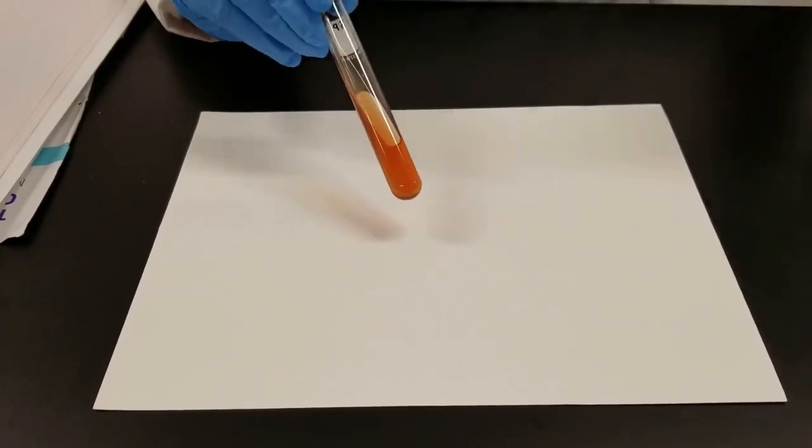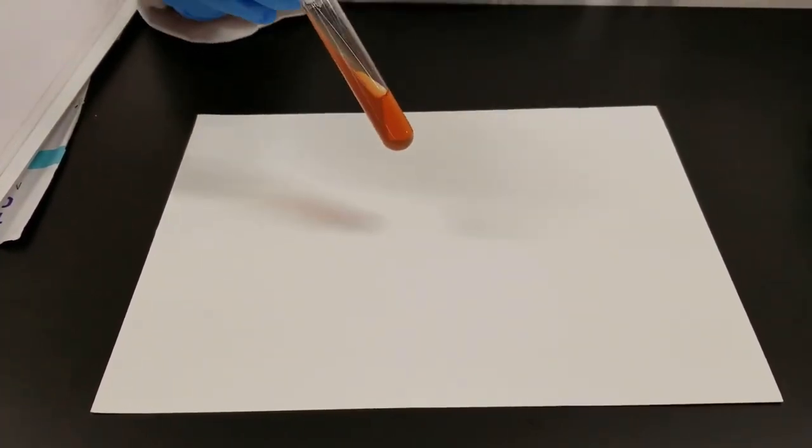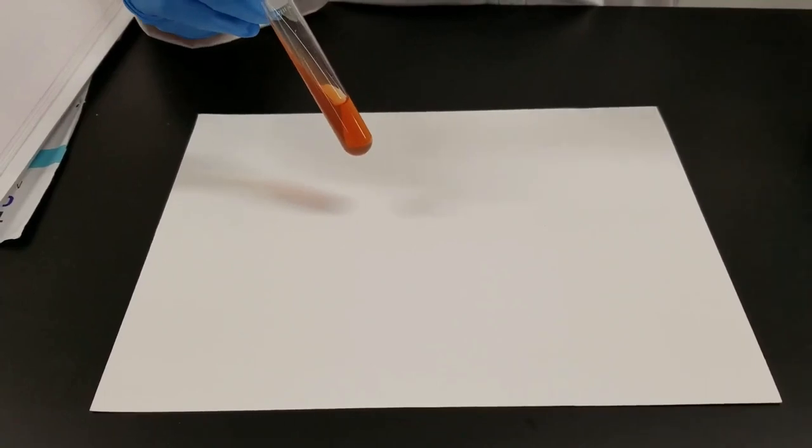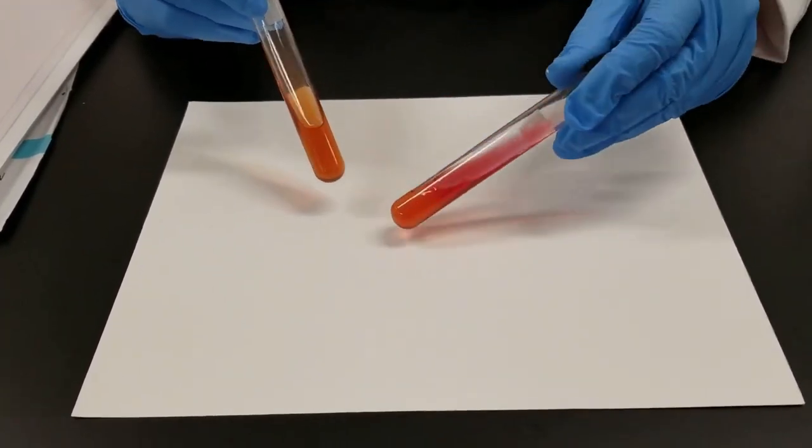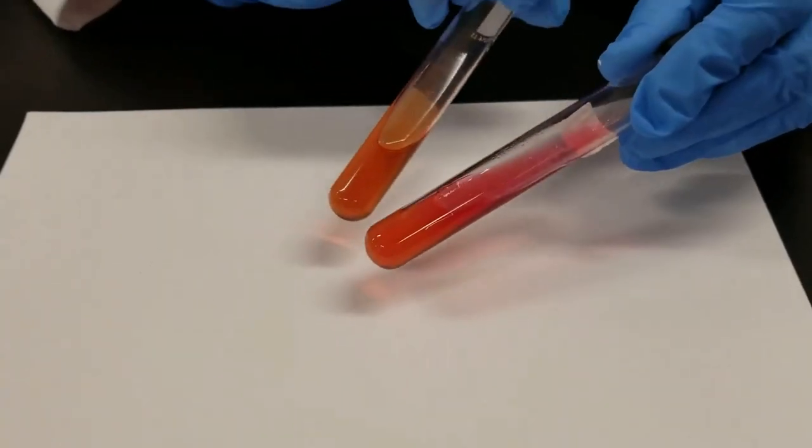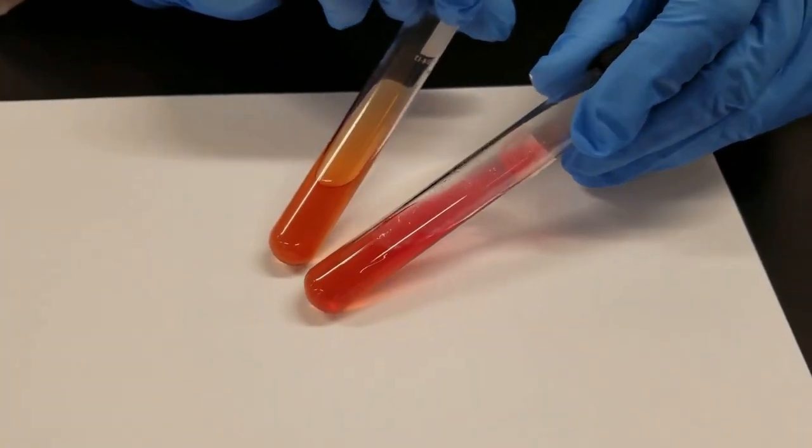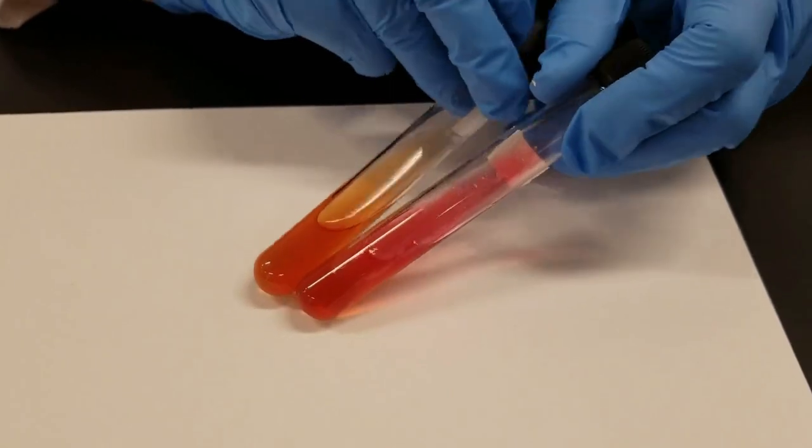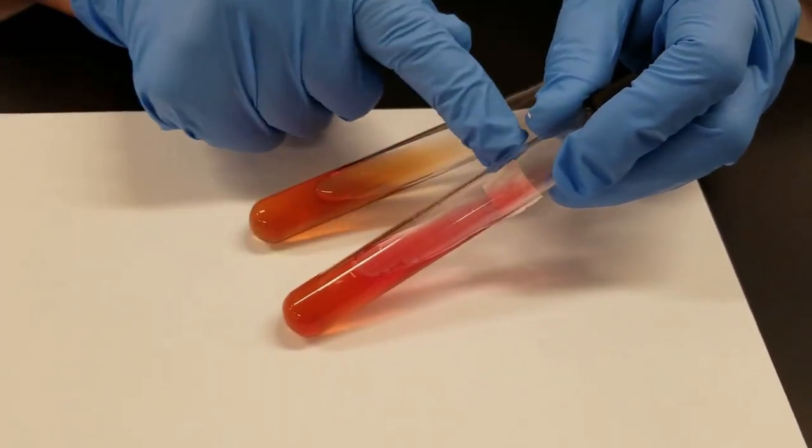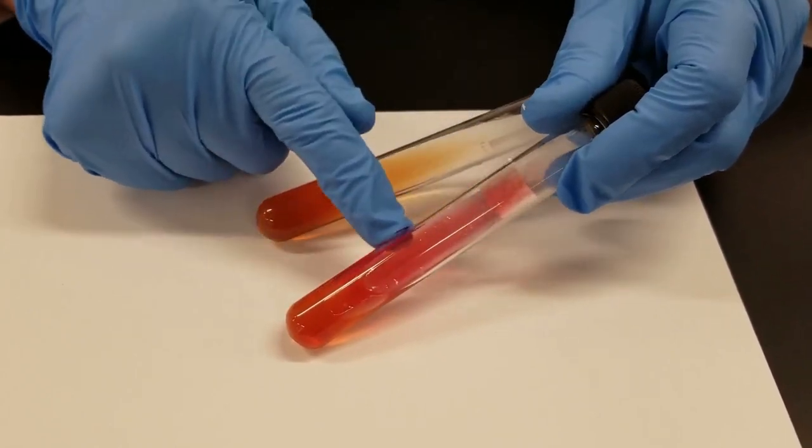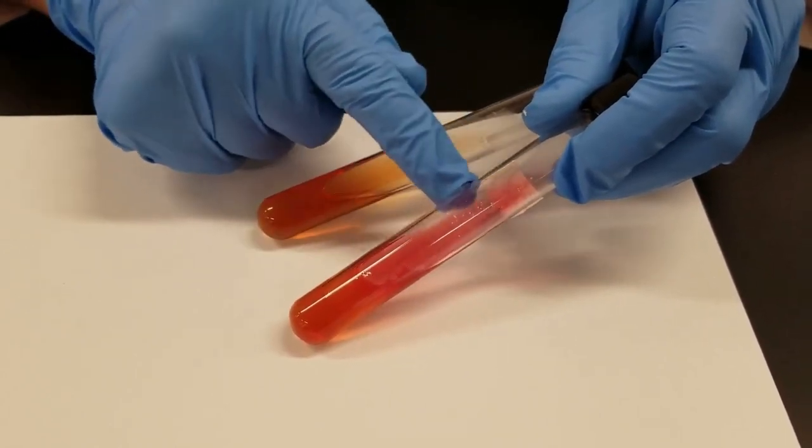This is an un-inoculated tube. For comparison purposes, we have here a Pseudomonas aeruginosa which was inoculated. And if you look at it, the coloration along - we will distinguish between the slant and the butt. And along the slant, it's actually a little bit more pink in color. So it is alkaline.